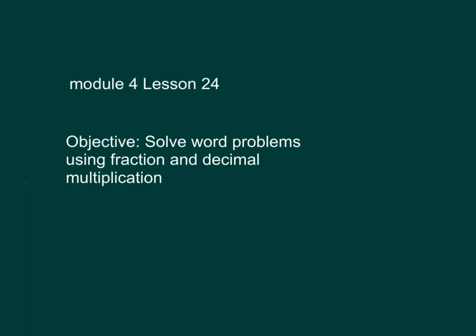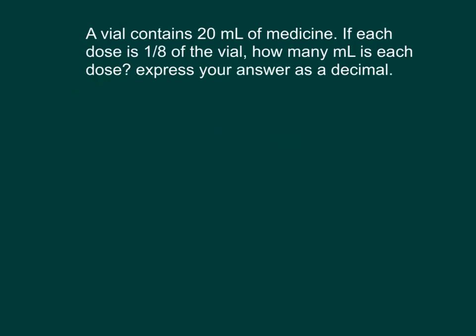The objective within this lesson is to solve word problems using fraction and decimal multiplication. A vial contains 20 milliliters of medicine. If each dose is one-eighth of a vial, how many milliliters is each dose? Express your answer as a decimal.